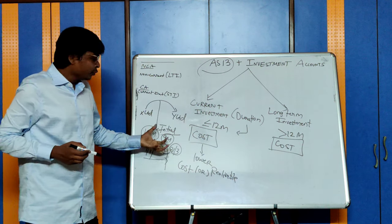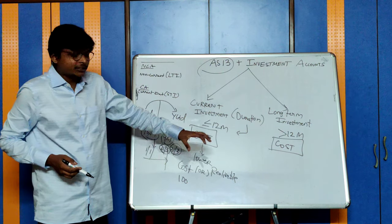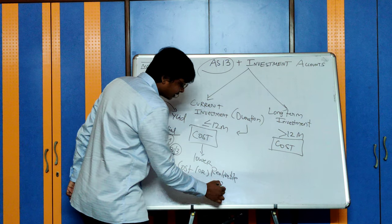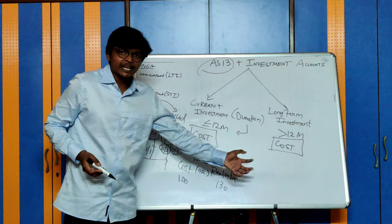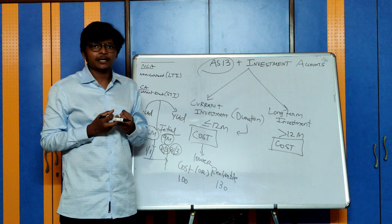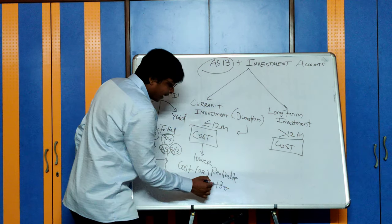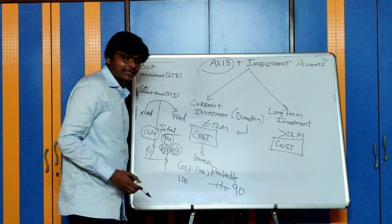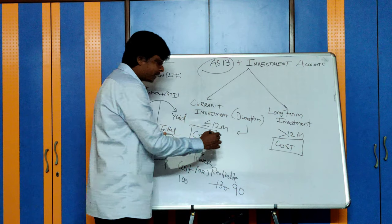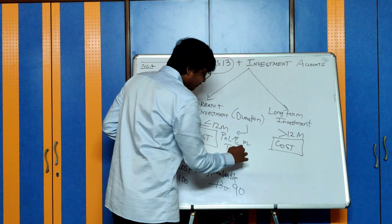Let's say when you purchase, the cost of the investment was 100, and when you do your revaluation on the balance sheet date, the realizable value turns out to be 130 — meaning if I sell it today, the fair value I will recover is 130. Should I make any adjustment? No. You will not record any gains. However, if the value drops to 90, then the difference of 10 rupees lost will be accounted by debiting your profit and loss account and crediting your investment.